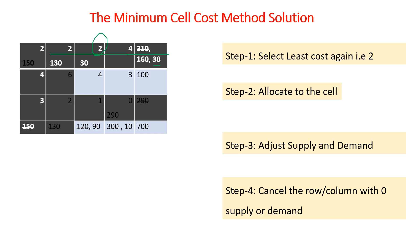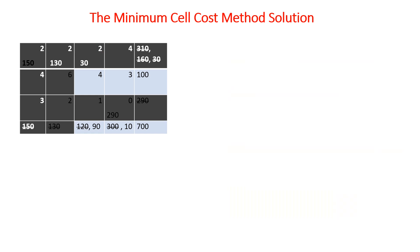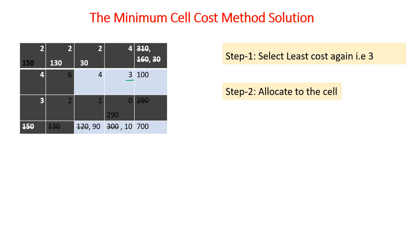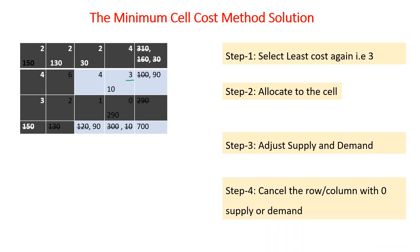Repeating the step, the minimum cost is now 3. The corresponding supply is 10 and demand is 100. We assign 10, subtract 10 from 100, leaving 90 remaining demand. That column is already finished, so we shade both that column and the associated row.